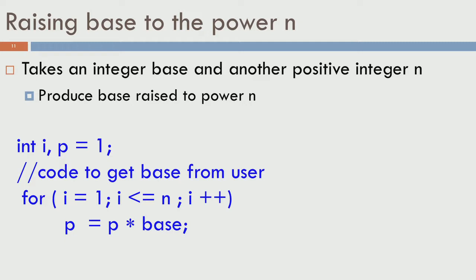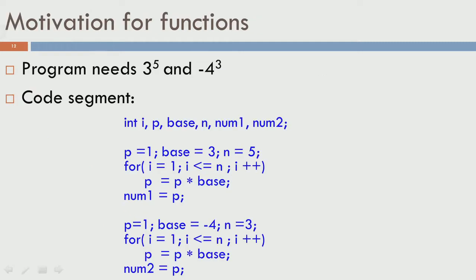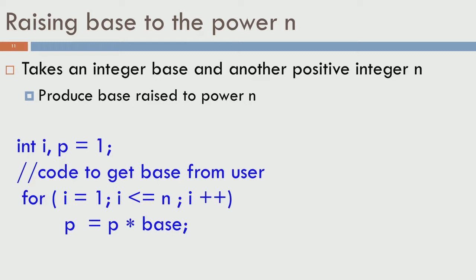Let us take a small problem of raising a base to the power of n, which is something very common in various programs. You can write it in a fairly simple way: initialize int i and p equals 1, then write a for loop — for i equals 1, i less than or equal to n, i++, p equals p times base. Starting with p equals 1 and multiplying by base n times takes care of raising base to the power of n. One thing to be careful about here is that I am assuming both base and n are integers — particularly, the power you are raising to must be an integer.